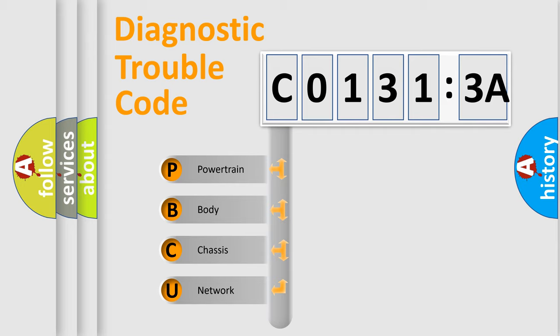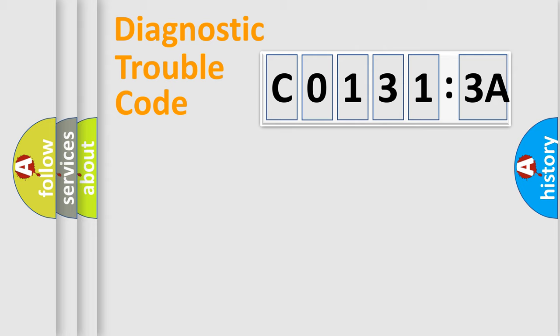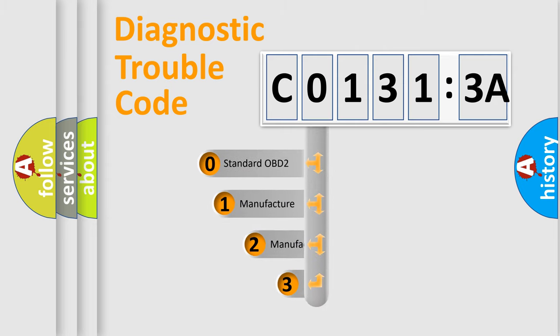We divide the electric system of automobile into four basic units: Powertrain, Body, Chassis, and Network. This distribution is defined in the first character code.